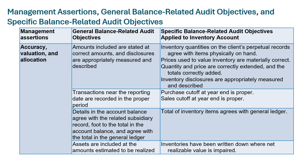The additional general balance objectives under AVA are: cutoff — transactions near the reporting date are recorded in the proper period (specific: purchase and sales cutoff at year-end is proper); detail tie-in — details in the account balance agree with the related subsidiary record, foot to the total in the account balance, and agree with the total in the GL (specific: total inventory items agree with the general ledger); and realizable value — assets are included at the amounts estimated to be realized (specific: inventories have been written down where net realizable value is impaired). A helpful mnemonic is CDR: Cutoff, Detail tie-in, Realizable value.